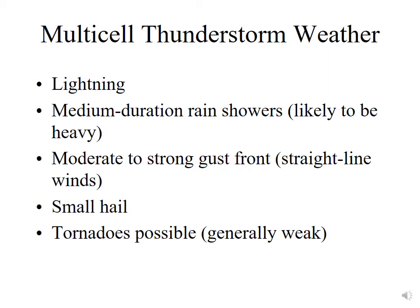Multi-cell thunderstorms have lightning because all thunderstorms do. They provide likely heavy rain showers of moderate duration, lasting a few hours. You typically have a moderate to strong gust front because the precipitation cools the atmosphere and the dry air from the rear inflow jet creates a stronger gust front. You can sometimes have small hail, and tornadoes are possible, although those associated with multi-cell thunderstorms are generally pretty weak.